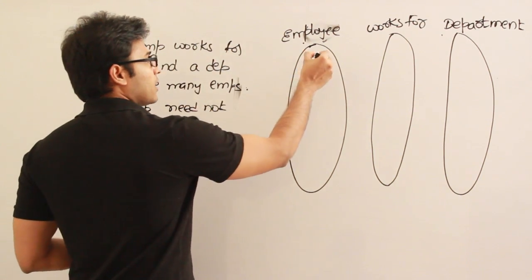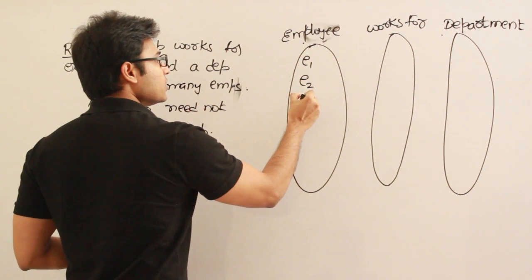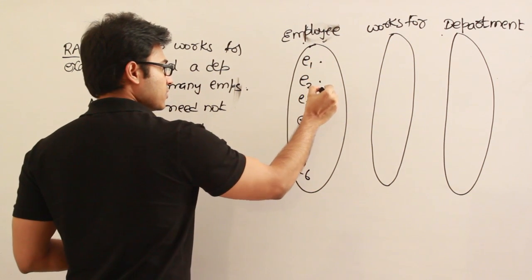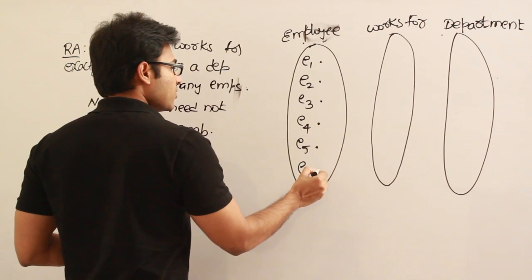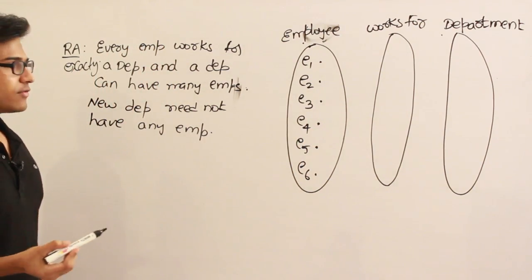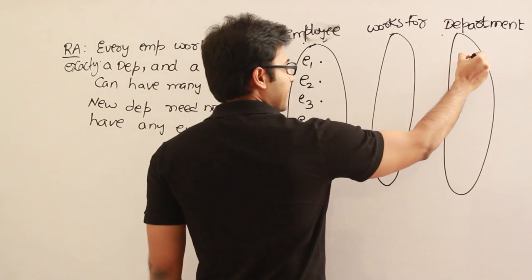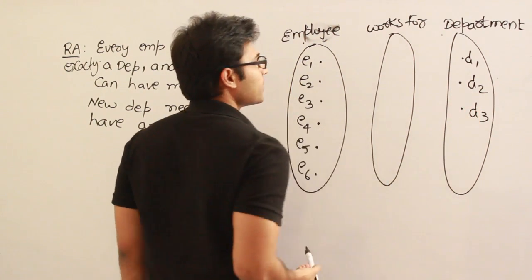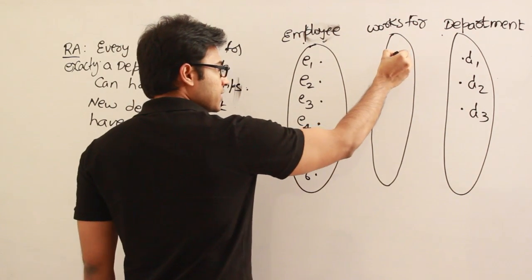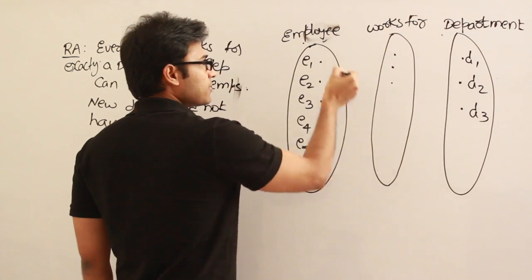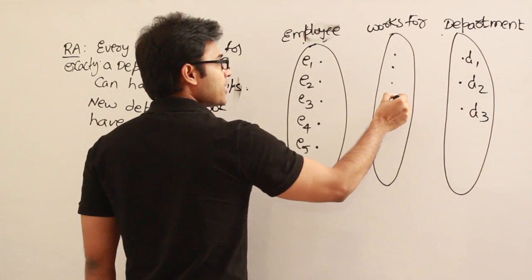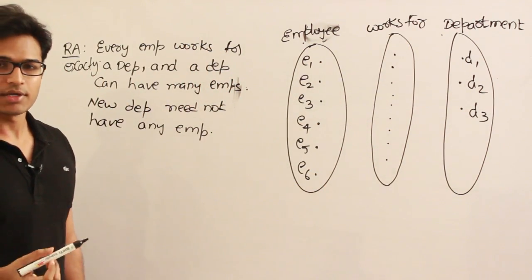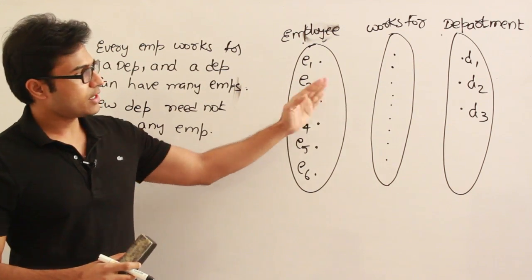Now let us say we have employees E1, E2, E3, E4, E5, E6 — each dot represents an employee. And we have departments D1, D2, D3. Every relationship in the relationship type is an association between one employee entity and one department entity. This is the employee entity type, this is the department entity type, and this is the 'works for' relationship type.